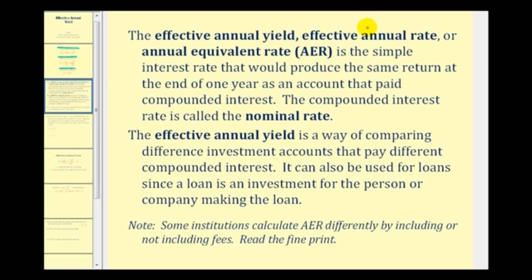The effective annual yield — sometimes called effective annual rate, or annual equivalent rate — is the simple interest rate that would produce the same return at the end of one year as an account that paid compounded interest. The compounded interest rate is called the nominal rate. So the effective annual yield is the simple interest rate that produces the same return as the nominal rate.